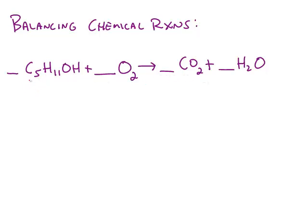We have five carbon atoms on the left side, but only one carbon atom on the right side. We can't change the subscripts to make the number of atoms the same, so what you can do is change the number out in front, called the coefficient. If I put a coefficient of five in front of the carbon dioxide, then I will have five carbon atoms on both sides.